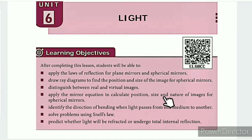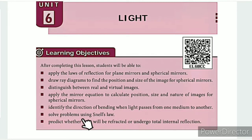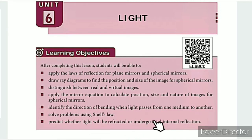Learning objectives continued: calculate position, size and nature of images for spherical mirrors; identify the direction of bending when light passes from one medium to another; solve problems using Snell's law; predict whether light will be refracted or undergo total internal reflection.